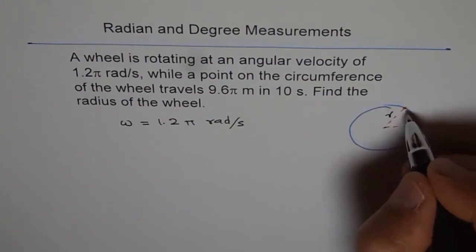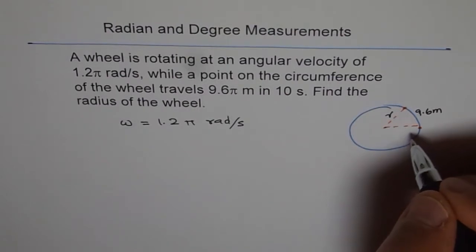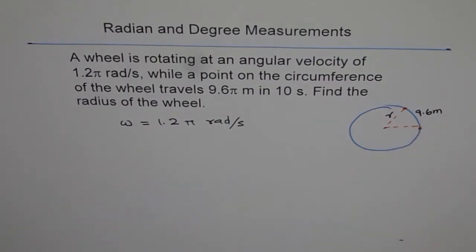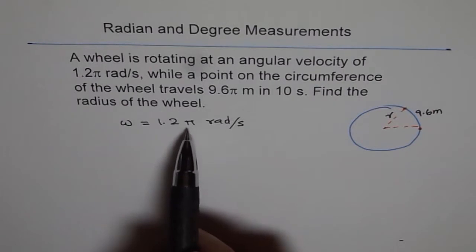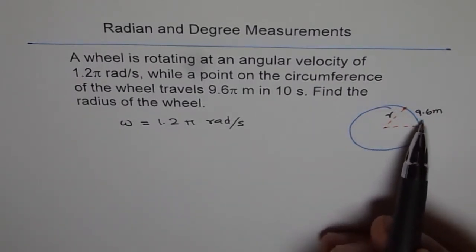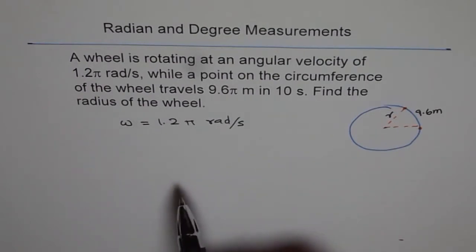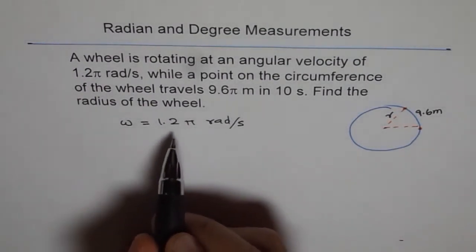And we know this much distance is 9.6 meters. Now, how will you do it? The thing is that we are given angular velocity as 1.2π radians per second, and the wheel rotates through 9.6 meters in 10 seconds. Well, according to angular velocity, what is the angle of rotation? That is what we can figure out.